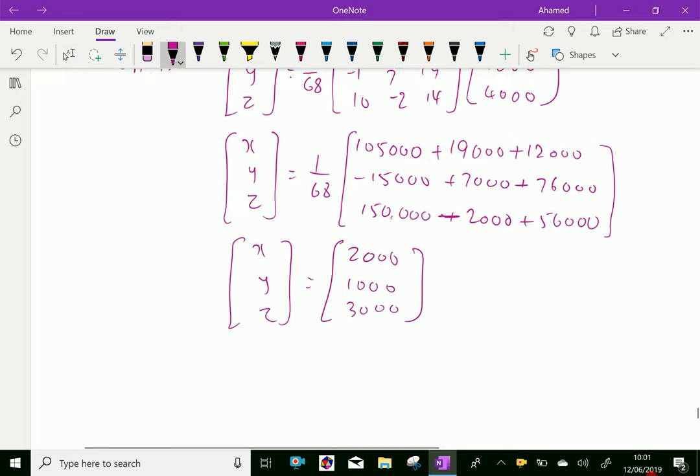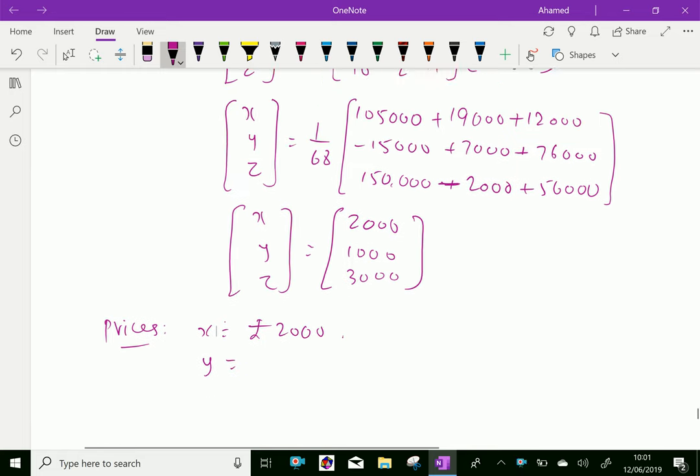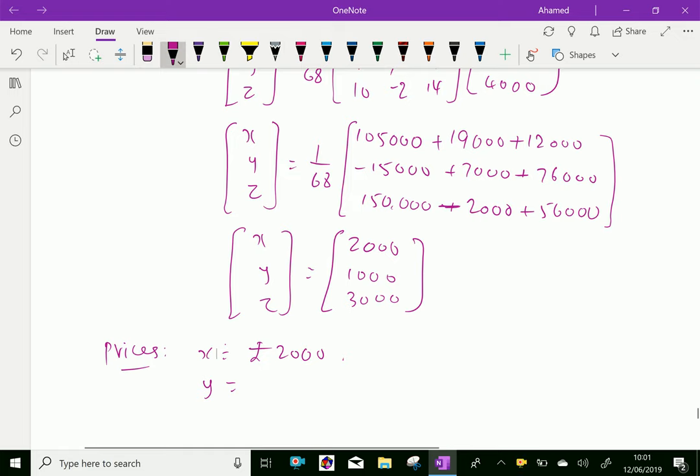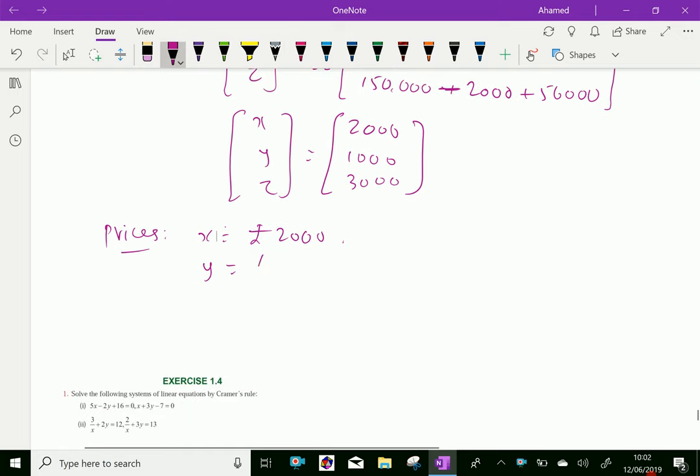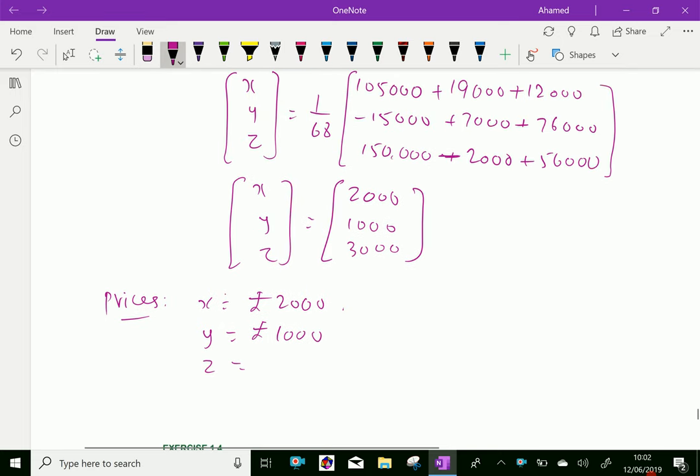Therefore, prices of commodity A is, therefore, X equal rupees 2,000, and Y is, that is, prices of B is rupees 1,000, prices of C is 3,000.